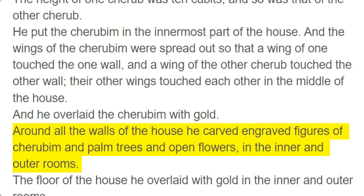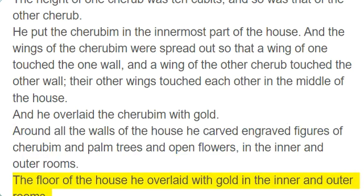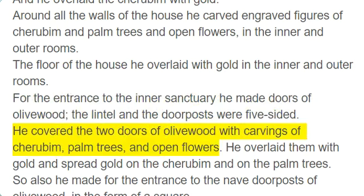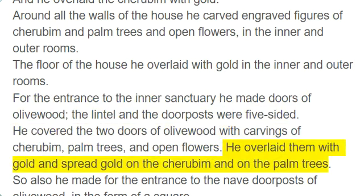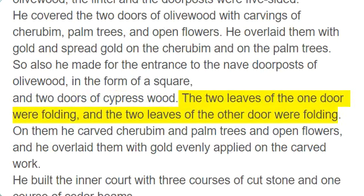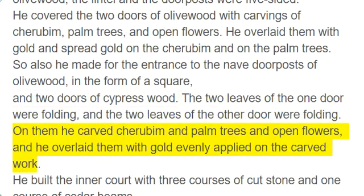Around all the walls of the house he carved engraved figures of cherubim and palm trees and open flowers, in the inner and outer rooms. The floor of the house he overlaid with gold in the inner and outer rooms. For the entrance to the inner sanctuary he made doors of olive wood; the lintel and the doorposts were five-sided. He covered the two doors of olive wood with carvings of cherubim, palm trees, and open flowers, and overlaid them with gold. So also he made for the entrance to the nave doorposts of olive wood in the form of a square, and two doors of cypress wood. The two leaves of each door were folding. On them he carved cherubim and palm trees and open flowers, and overlaid them with gold evenly applied on the carved work.